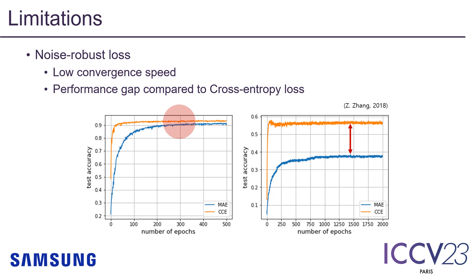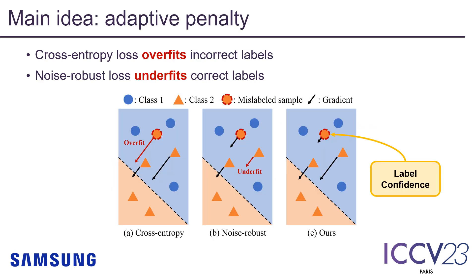This phenomenon is clearly represented when there are no incorrect labels — see the graph. To address this issue, our method started from a simple idea: adaptive penalty. Briefly, cross-entropy loss overfits incorrect labels, and noise-robust loss underfits correct labels. Then we can impose sample-wise penalty based on its label confidence. The following contents are about how to design the label confidence and sample-wise penalty.